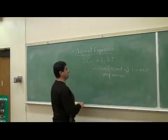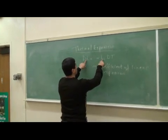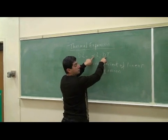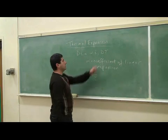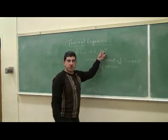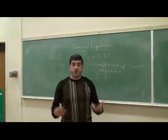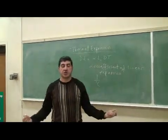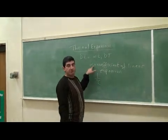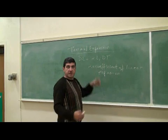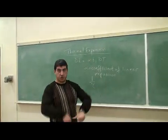The units of alpha — since delta L and L initial are both in meters — alpha must have units of one over Celsius, in order to cancel with the change in temperature, which is in Celsius. Alpha tells you how much a material tends to expand. The bigger the alpha, the more it expands. Metals usually have a large alpha because they expand a lot when heated and contract a lot when cooled.